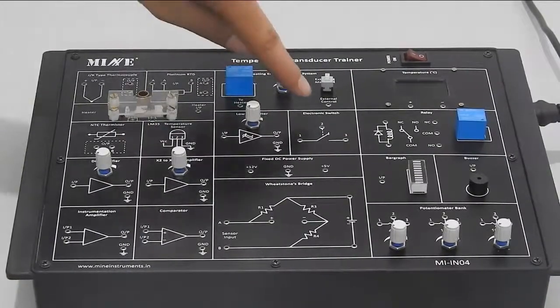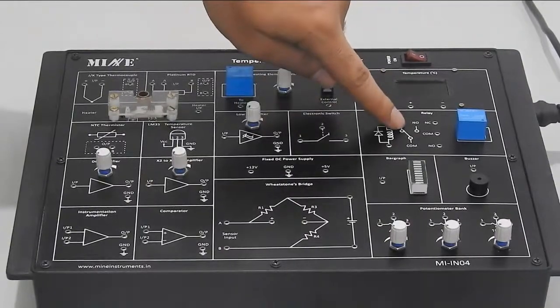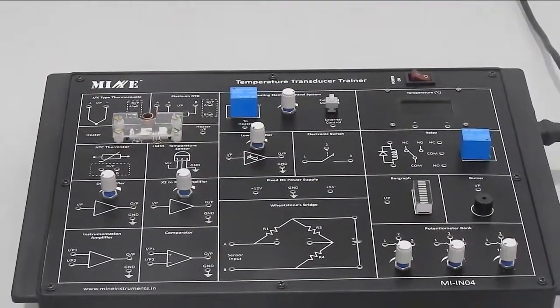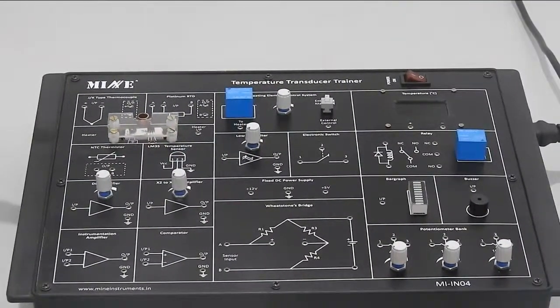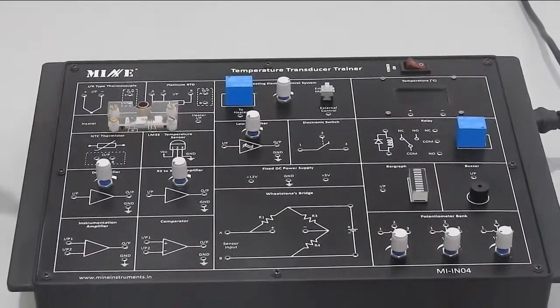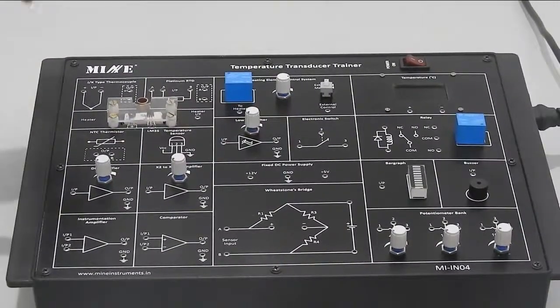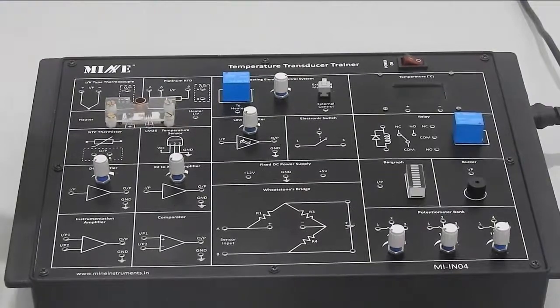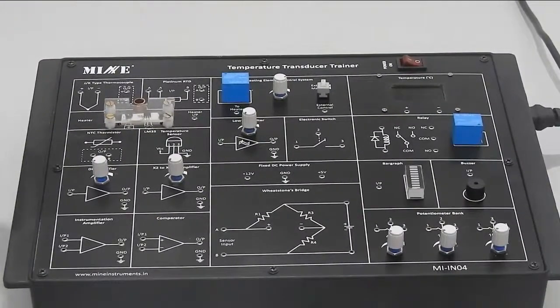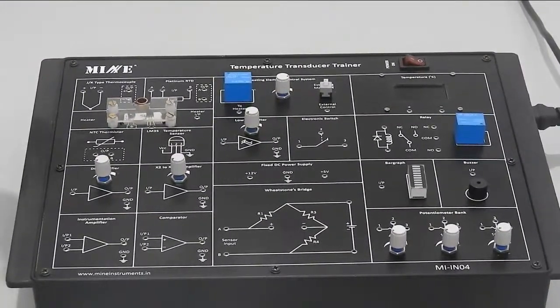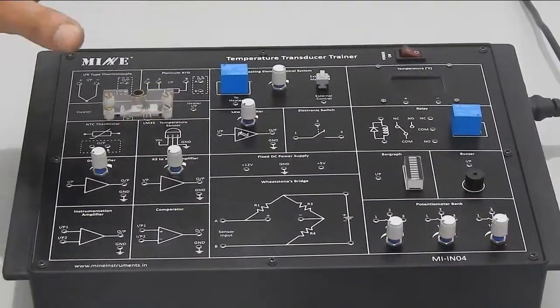There is an electronic switch and one relay. These products can be used to perform various experiments like characteristics of transducers, open-loop system and closed-loop system for transducers. Many more kinds of practicals can be performed by the trainer.